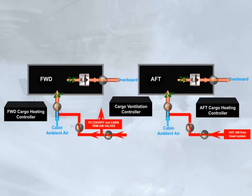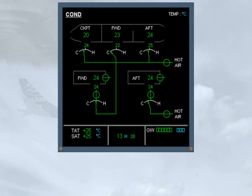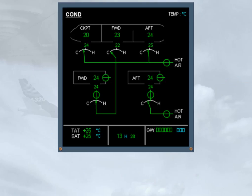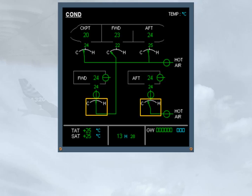Let's see how information on the cargo conditioning system is presented to the pilots. On the ECAM COND page, the indications related to each cargo compartment are the inlet and outlet isolation valves and the trim air valve.